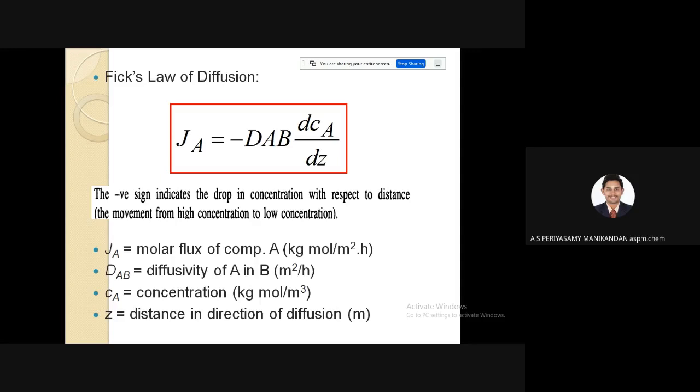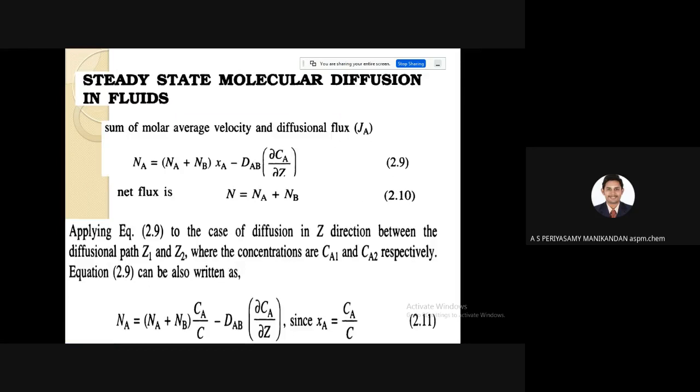The law of diffusion is very important in order to explain the diffusion. Some law will be used to define my flux of the component. The flux is directly proportional to the diffusivity and the concentration gradient, which is represented by Ja equals minus Dab into dCa by dz where Dab is our diffusivity and dCa by dz is the concentration gradient.